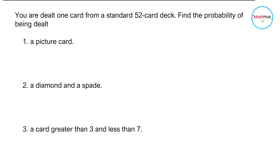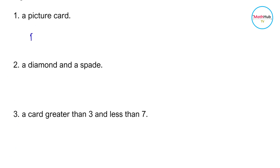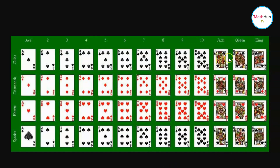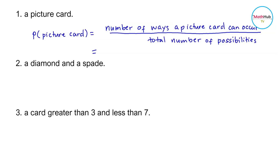You are dealt one card from a standard 52 card deck. Find the probability of being dealt: a picture card, a diamond and a spade, and a card greater than three and less than seven. The probability of being dealt a picture card is the number of ways a picture card can occur divided by the total number of possibilities. Picture cards are jacks, kings, or queens. Counting them: 1 through 12 — there are 12 picture cards. So the probability is 12 over 52, which simplifies to 3 over 13.